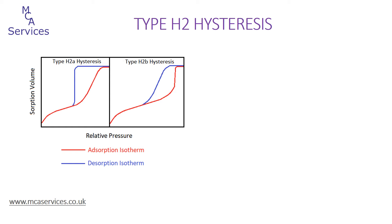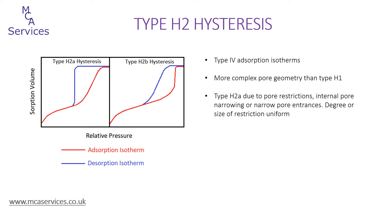Here we have type H2 hysteresis. As with type H1, this also occurs with type 4 adsorption isotherms. Both type H2A and H2B are associated with more complex pore structures than type H1, with internal restrictions or pore blocking. In the classic ink bottle pore model, this is also associated with narrow or restrictive pore entrances or necks. With type H2A, the desorption isotherm is steep with respect to the volume change, due to the size of pore entrances or restrictions being quite uniform. The more gradual slope of the adsorption isotherm is suggestive of larger pore cavities beyond the pore neck, with greater variability in size.